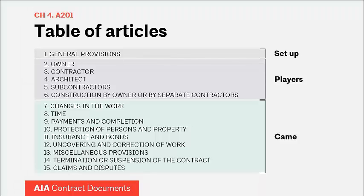Here is the table of articles as they currently exist. As we go through this content today, look for themes of keeping the work going, allocating risk to the party best able to manage it, and what each party's role is. This table of contents has not changed much over the last iterations on the 10-year cycles — the A-201 is over 100 years old, almost 110. Articles 1 through 6 are the setup and the players; Articles 7 through 15 — the Game — will be in the December seminar.